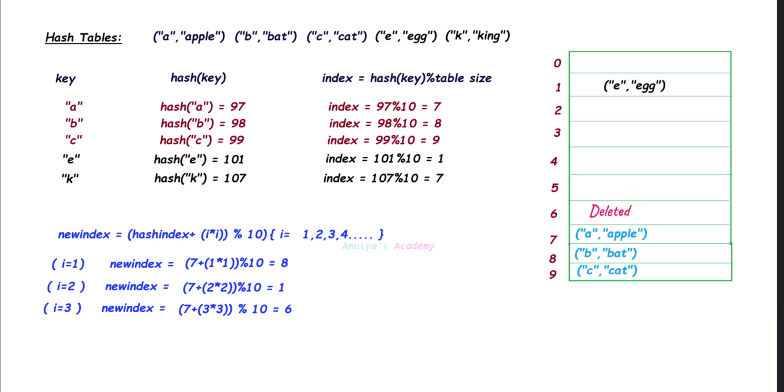To summarize: to delete a key-value pair, the key must be given. Find the hash code, find the index, and check whether the slot is empty. If empty, return 'key not found.' If not empty, use either the chaining method or open addressing — based on which technique the hash table uses — to find the key and delete the key-value pair. If the key is not found, return 'key not found.' That's it for now. Thank you for watching — don't forget to subscribe. See you in the next class!